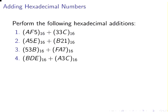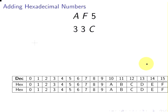So we're going to carry out all of these calculations here. Let's start off with the first one here, AF5 and 33C. Now, you notice at the bottom, I have listed out the decimal digits, the decimal numbers 0 to 15, and also the hexadecimal equivalent. But I've used two rows for the hexadecimal equivalent. And the reason for that will become clear soon enough.